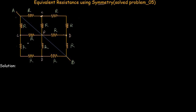Looking at the network, these two resistors and these two resistors are connected in series, so their equivalent resistance is 2R each. Let's replace these two pairs of series resistors with their equivalent resistance of 2R. Now for simplification purposes, let's redraw this network.